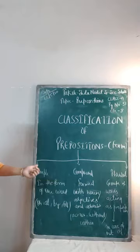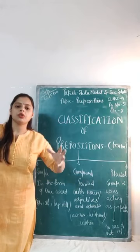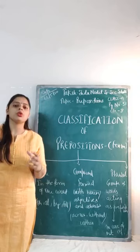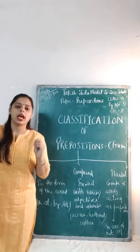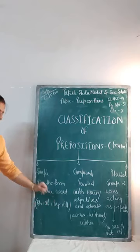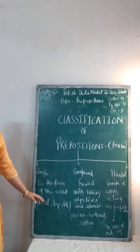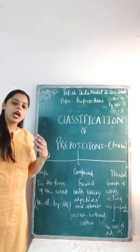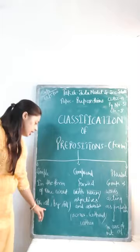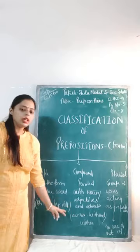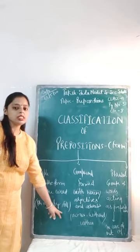Simple prepositions are those prepositions which are used in the form of only one word. Un prepositions ko jinko ki hum ek word mein hi use karte hain, unko simple prepositions kehete hain — jaise in, at, by, till. For example: 'He lives at Connaught Place in Delhi.' In this sentence we have used 'at' and 'in.' Another example: 'He will complete his work till evening.' Here 'till' is a preposition.